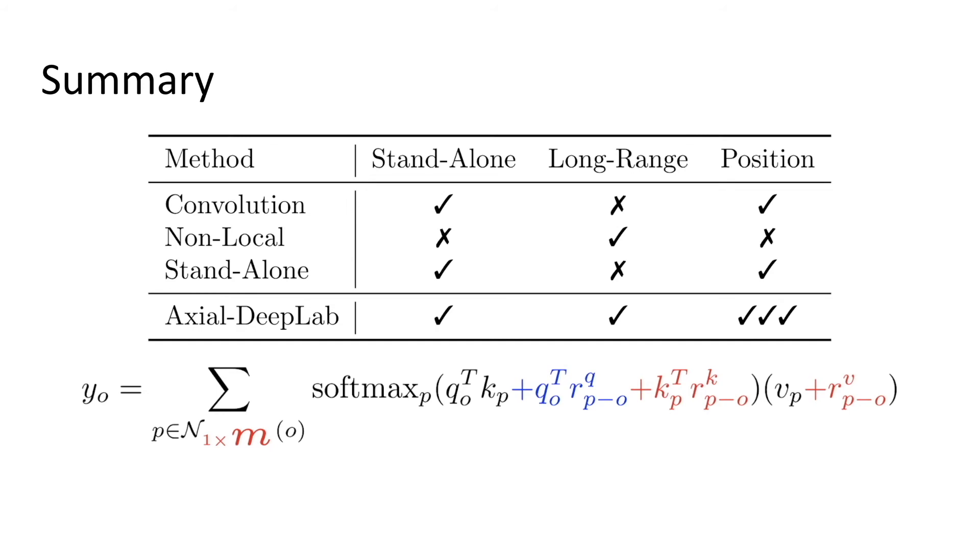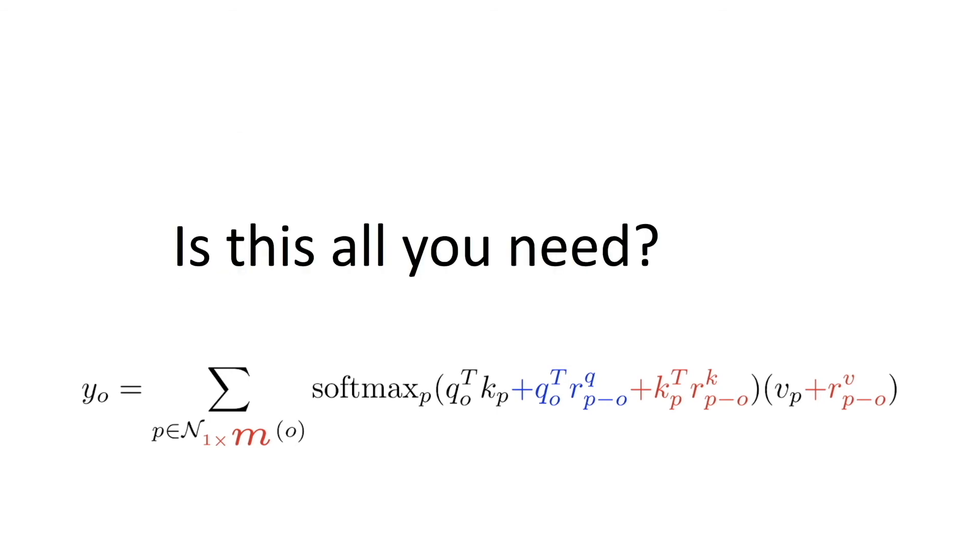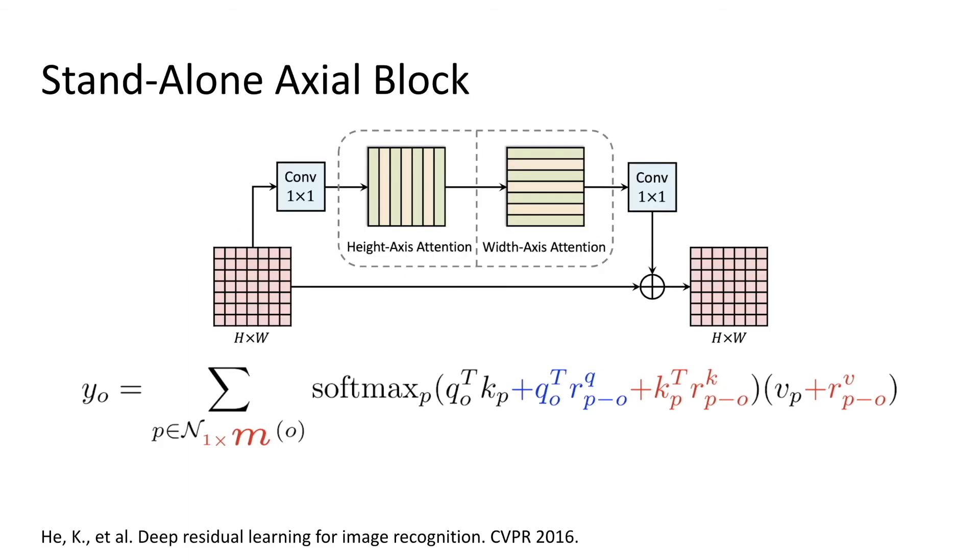To summarize, we are proposing a standalone alternative to convolution that can be used to build a backbone for vision tasks. It captures long-range relations together with spatial structure. Now we ask this question again. Is this model all you need? We answer this question by building a standalone model with our Axial Attention only.